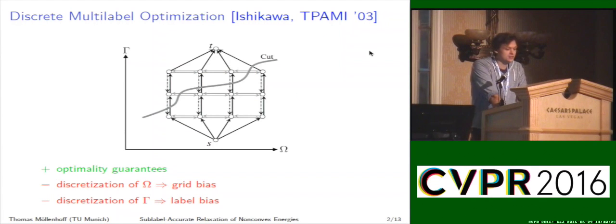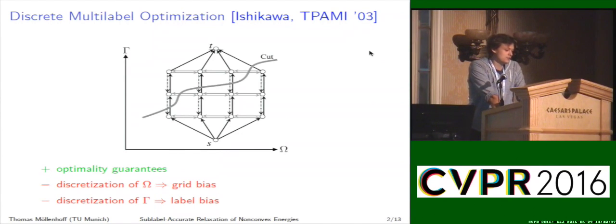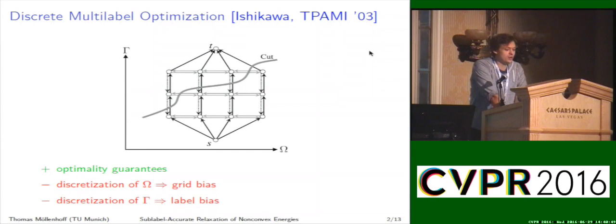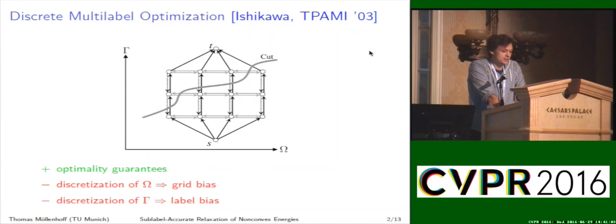In the computer vision community, a breakthrough in solving these non-convex optimization problems in a globally optimal way was proposed by Ishikawa in 2003. The idea there is to, instead of optimizing just over the function from omega to gamma, consider the product space omega times gamma. In this product space, one formulates a graph, and by obtaining a graph cut in this product space, one can find the globally optimal solution. But due to the discretization of the domain omega and the range gamma by this graph structure, one gets significant grid bias and label bias.